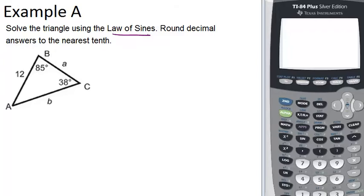what we want to do is match up angles with their opposite sides. So angle C matches up with 12, and angle B, or 85 degrees, matches up with side B. And angle A, which we don't know yet, will match up with side A.